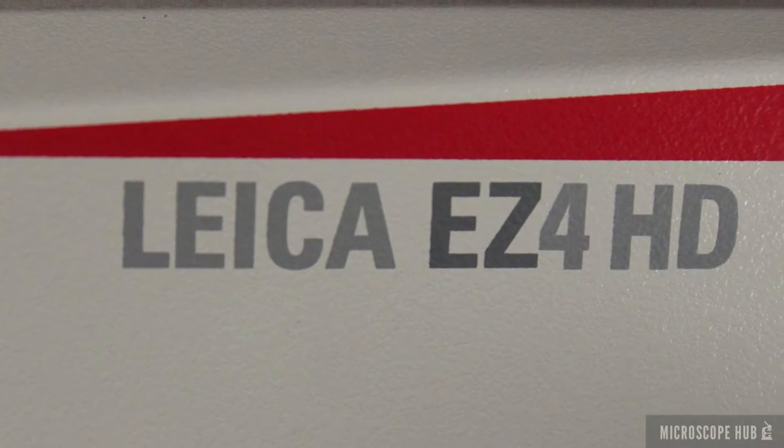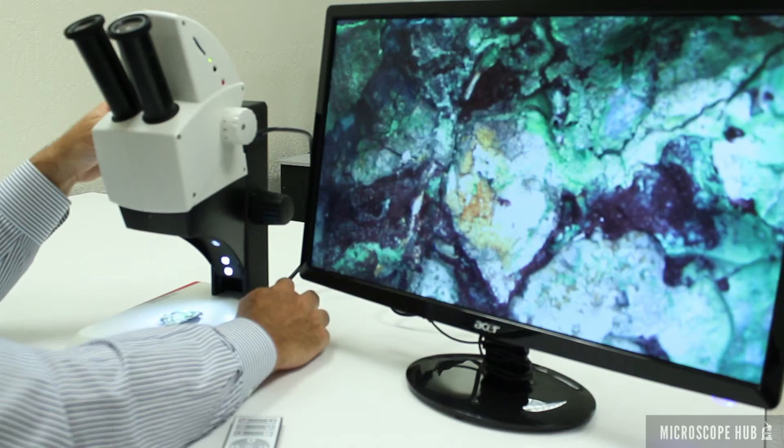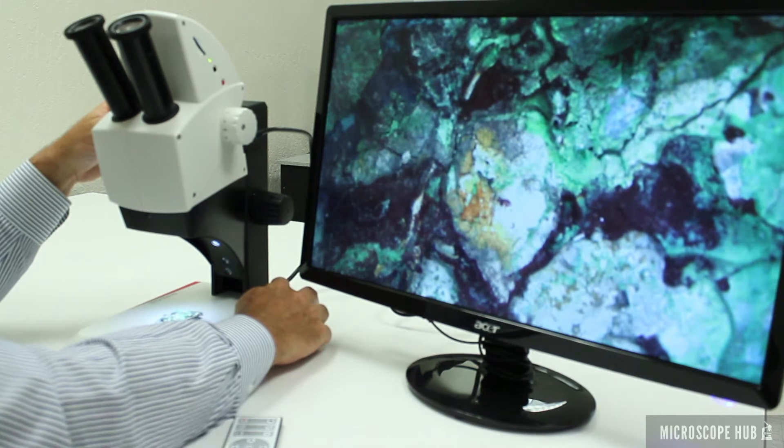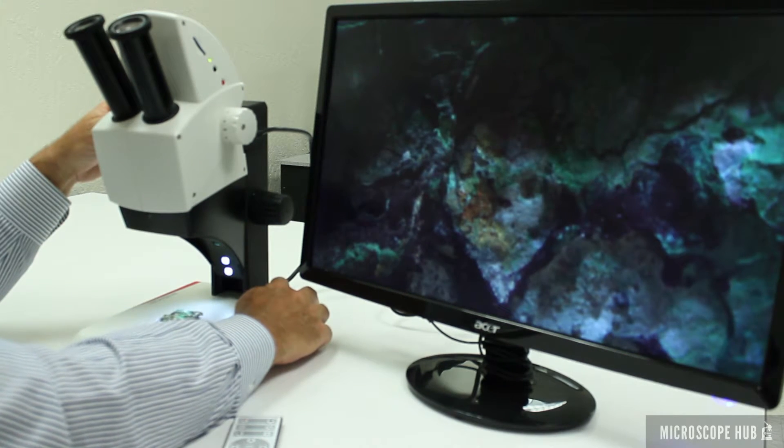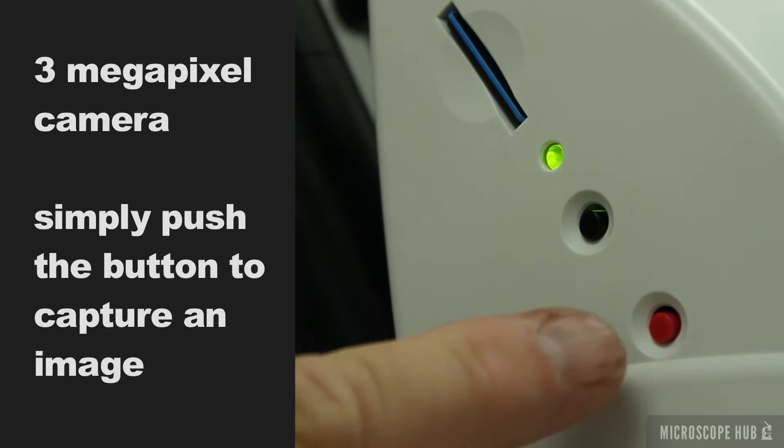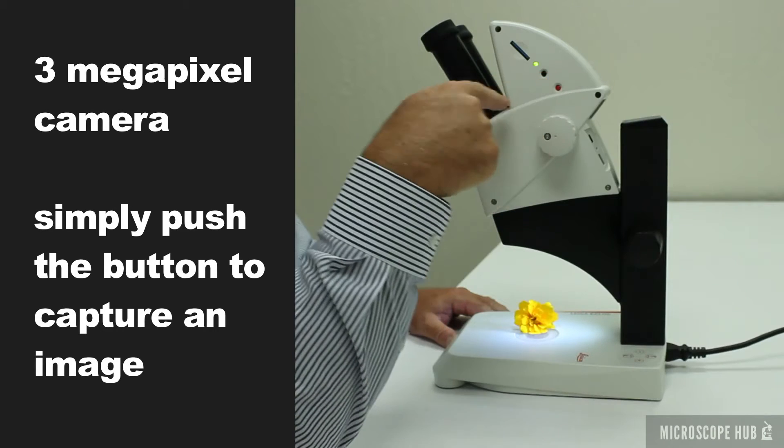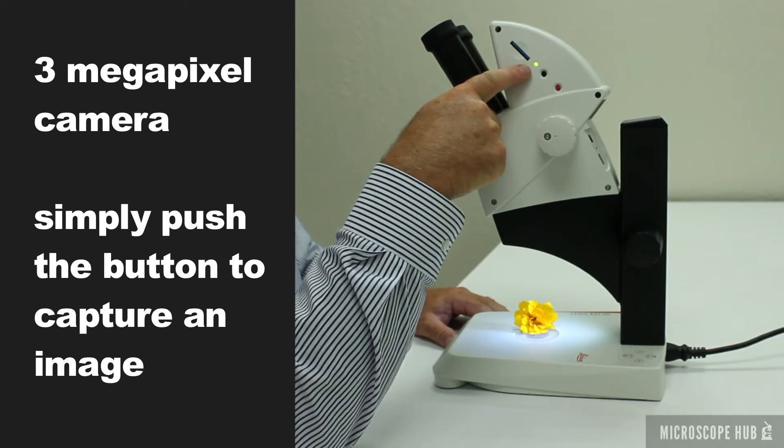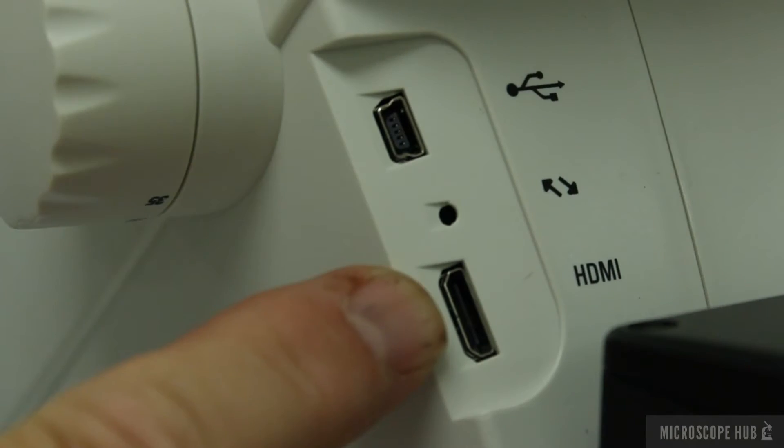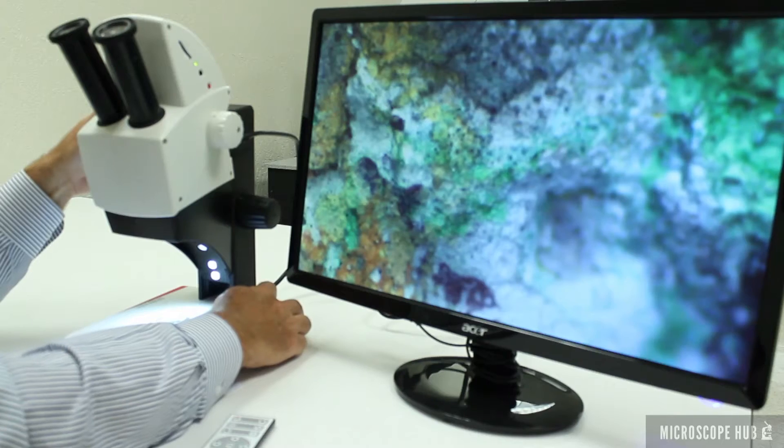The EZ4 HD Educational Stereo Microscope offers the best modern technology for college and high school science programs. It comes with a built-in digital camera for taking pictures. It can store images onto an SD card or connect to an HD monitor or computer for a live view.